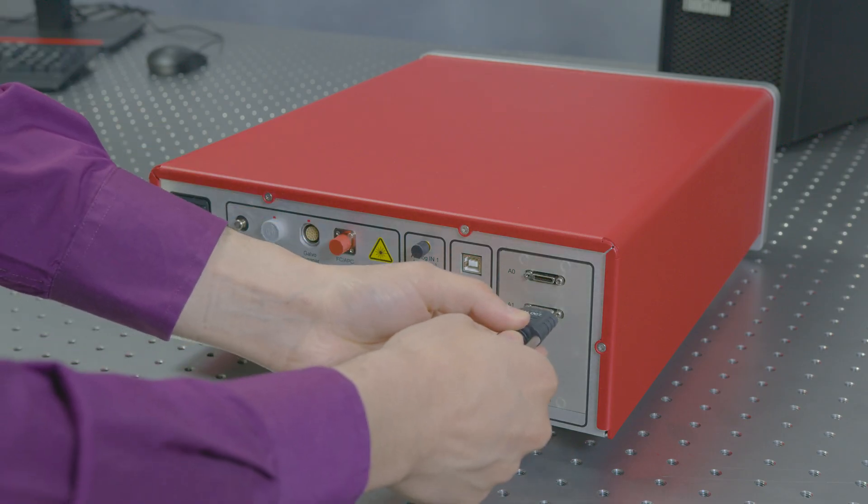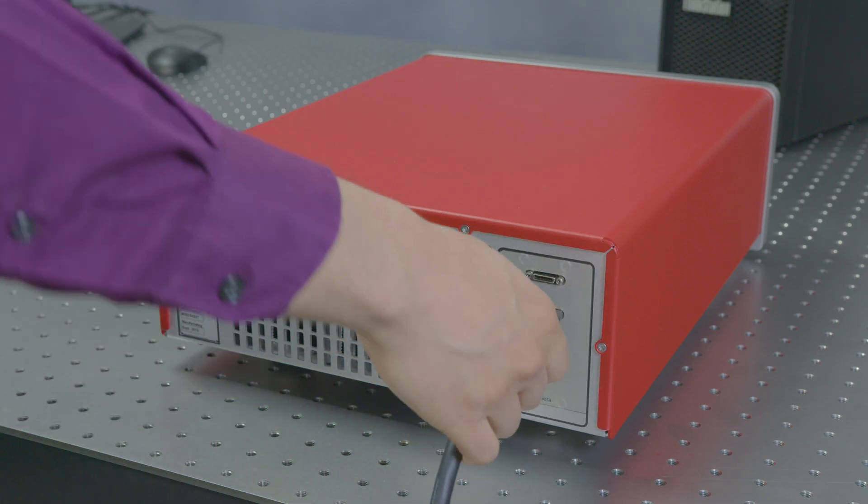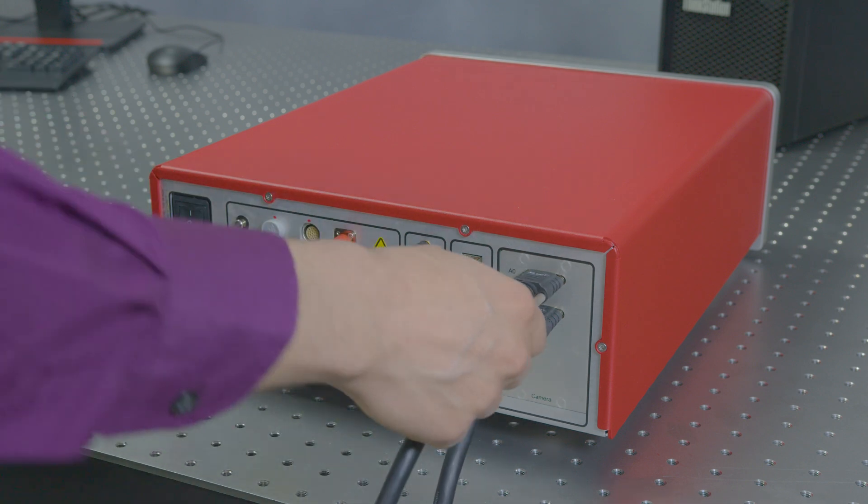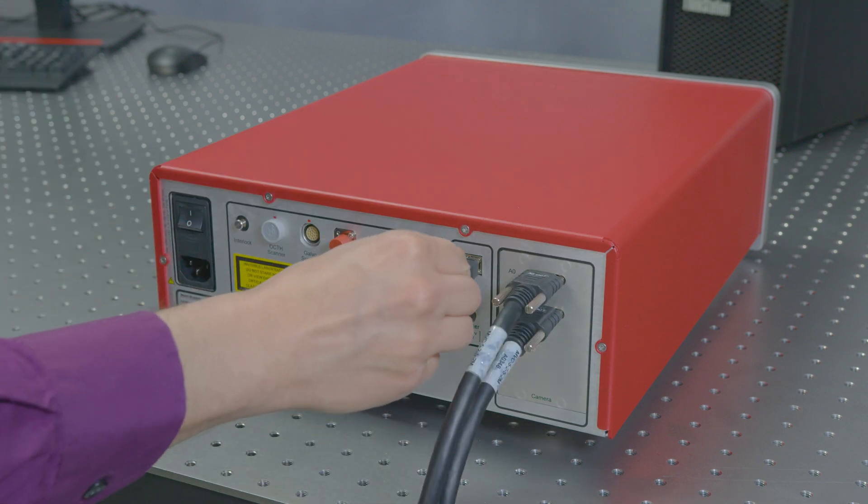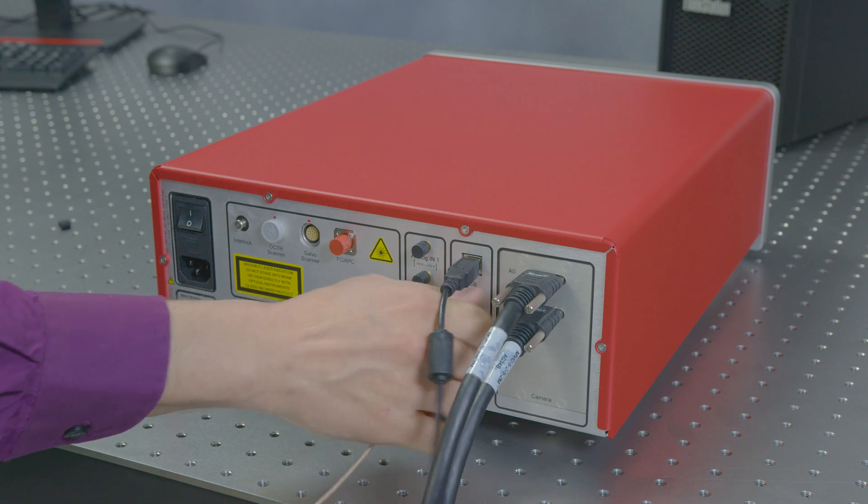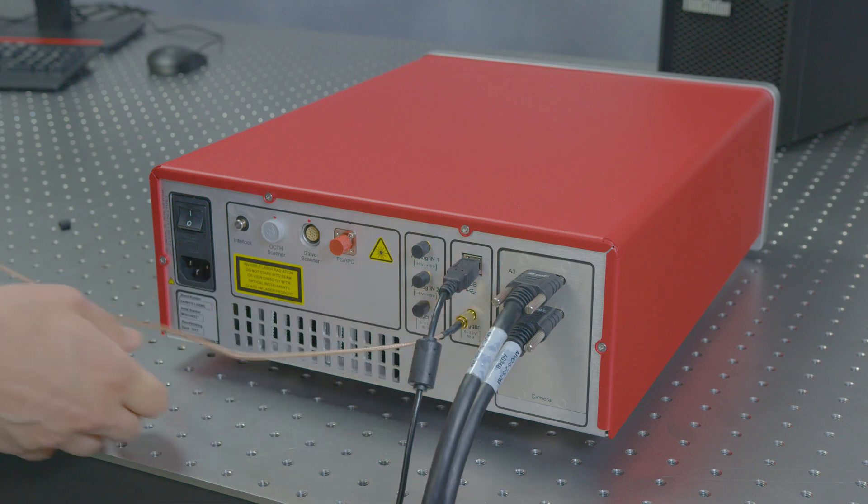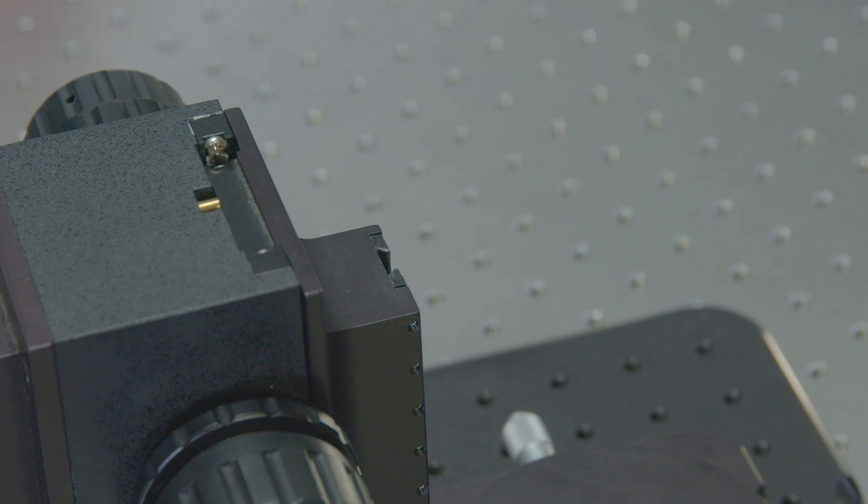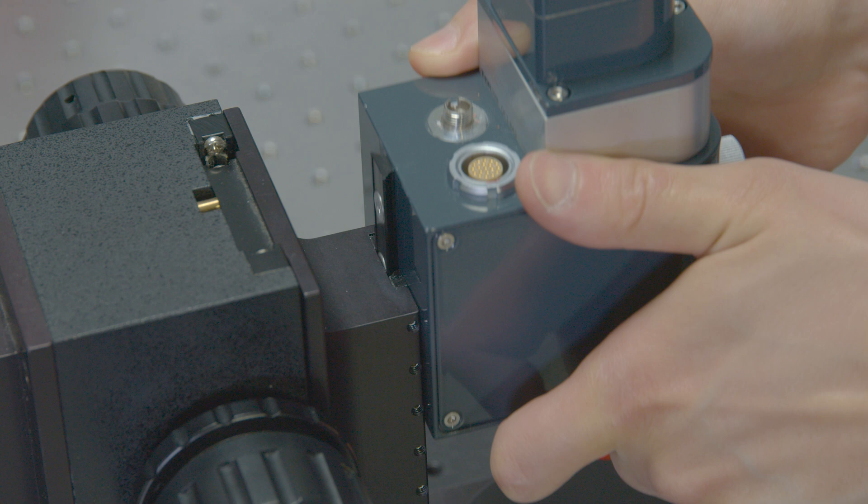Attach the appropriate cables from the OCT system to the computer. Refer to the quick start guide for details. Slide the scanning unit into the base via the dovetail adapter.